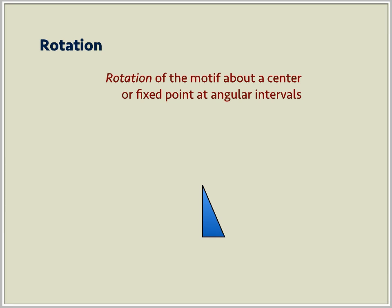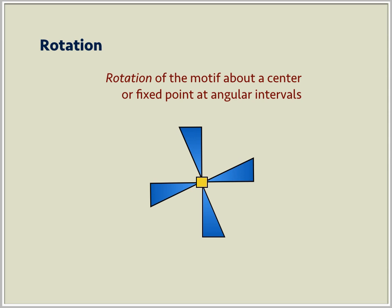A rotation moves a motif about a fixed point at angular intervals. The symmetry is represented by a point or a polygonal figure that marks the location of the center of rotation. In this case, the square is used to indicate the center of a 90-degree rotation.